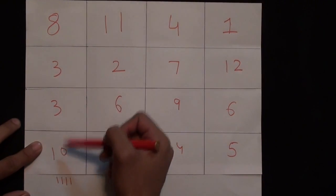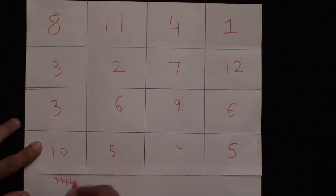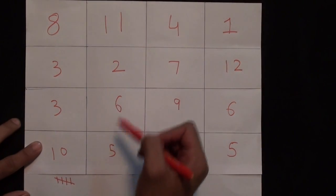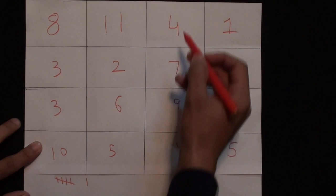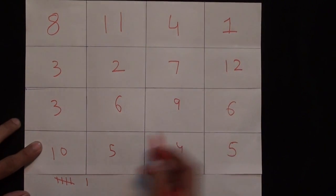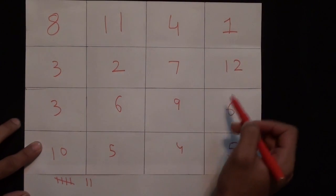11 plus 2 plus 6 plus 5 also equals 24. 4 plus 7 plus 9 plus 4 equals 24. 1 plus 12 plus 6 plus 5 adds to 24.